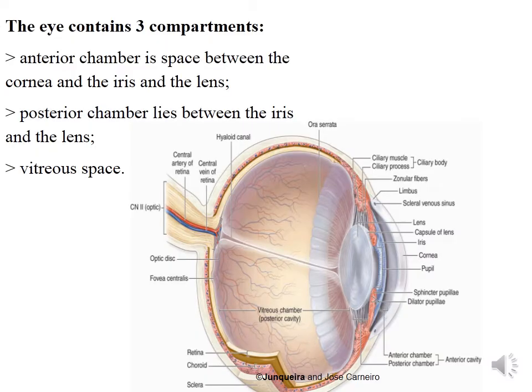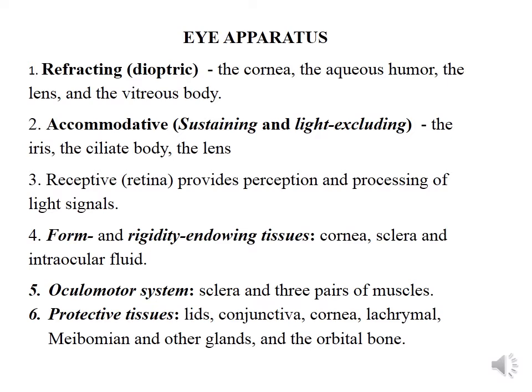There are three compartments in the eye. The anterior chamber is the space between the cornea, iris, and lens. The posterior chamber lies between the iris and the lens, and the vitreous space. There are several apparatus in the eye. One is the refracting or dioptric apparatus: the cornea, aqueous humor, lens, and vitreous body. The accommodative apparatus is presented by the iris, ciliary body, and lens.